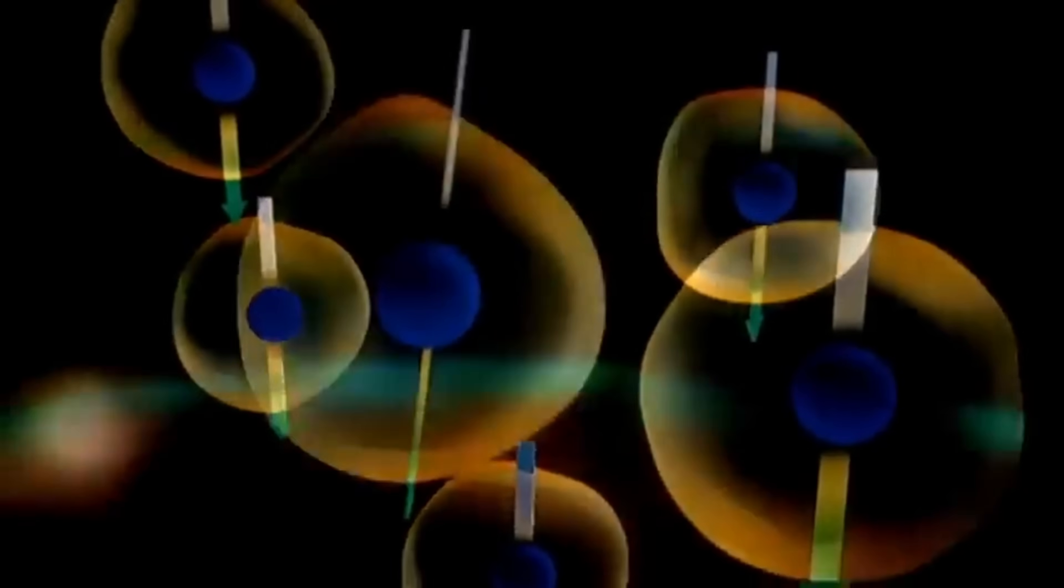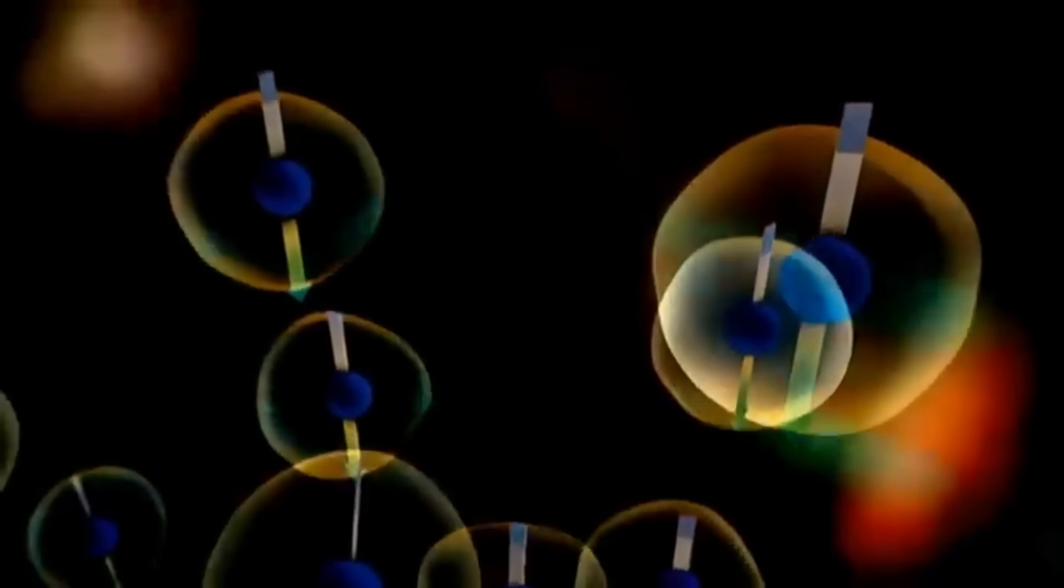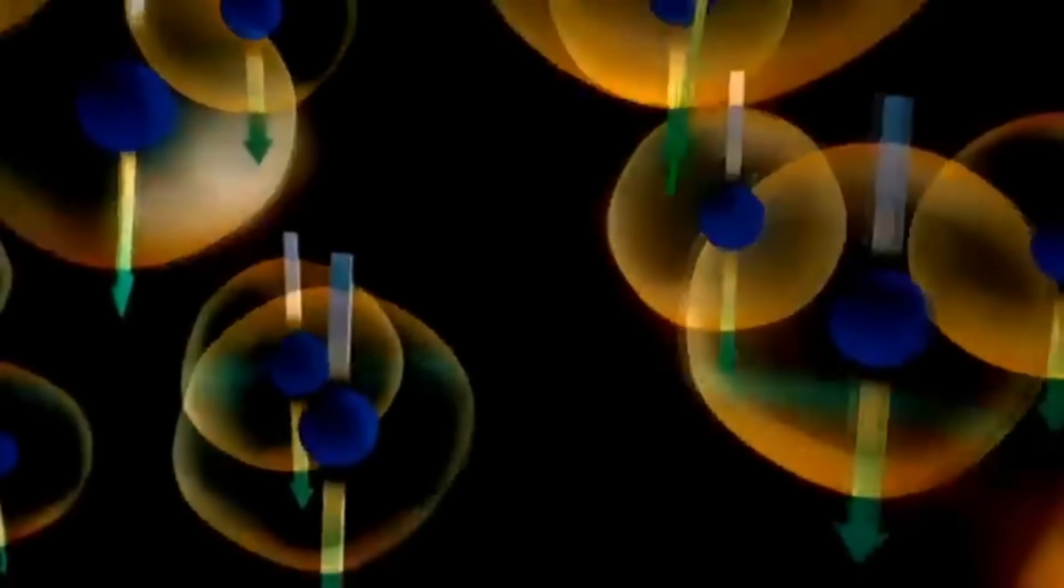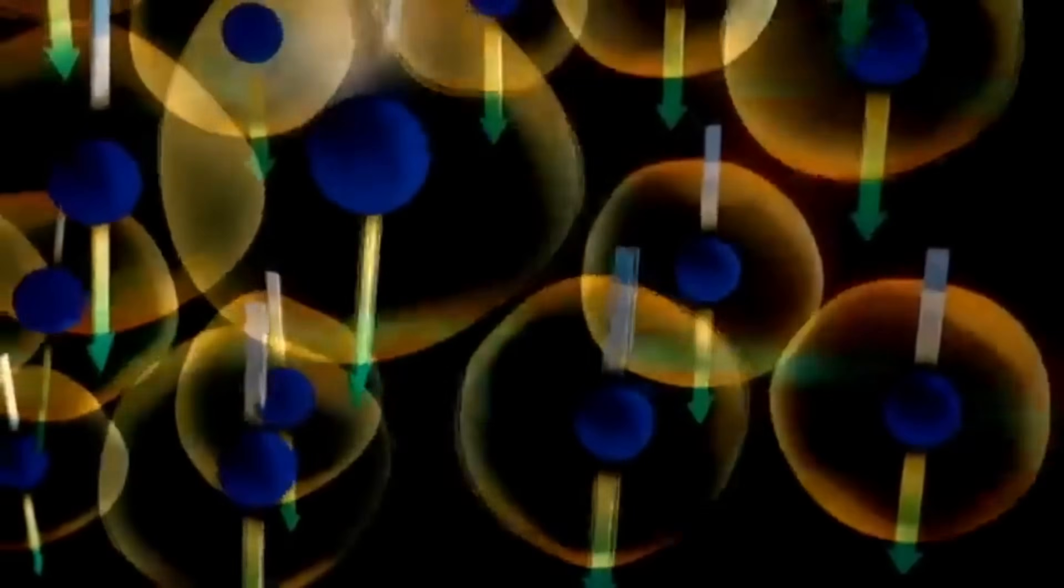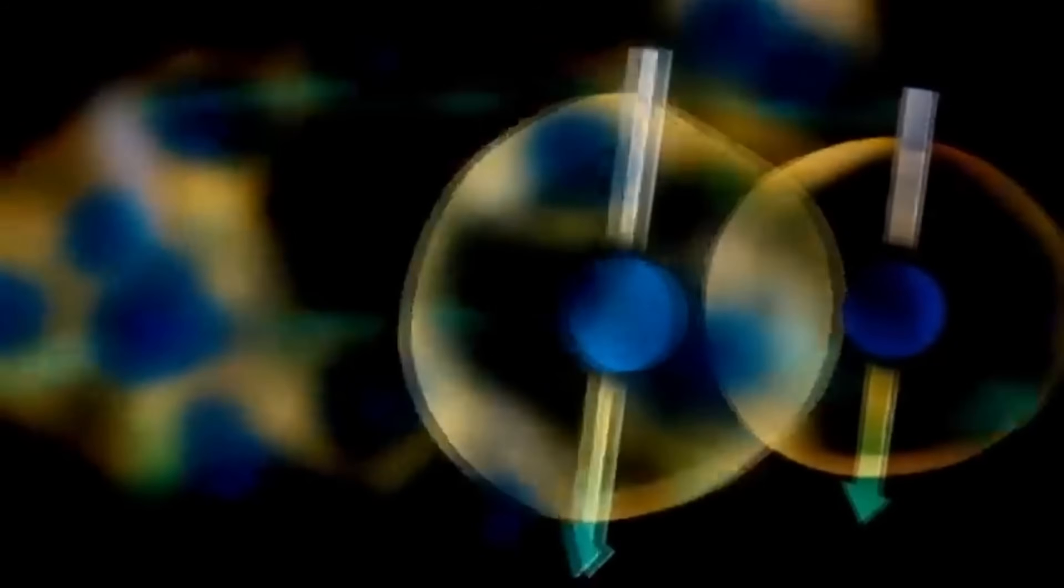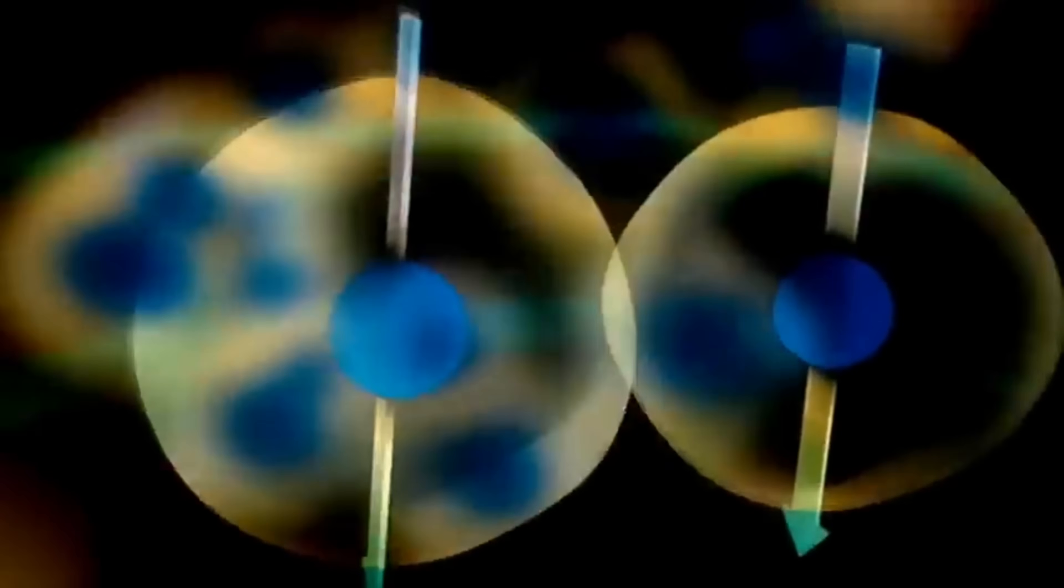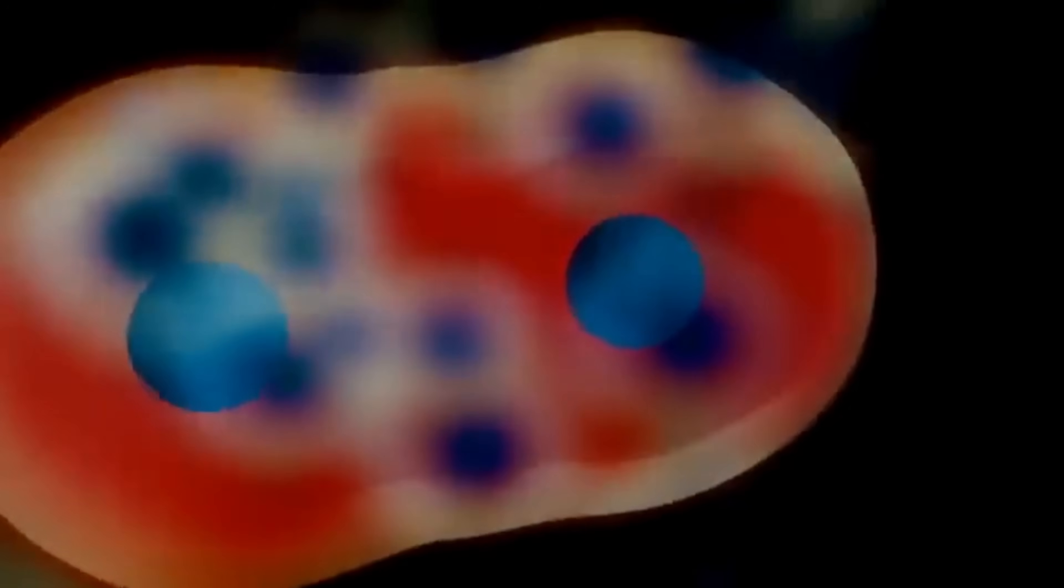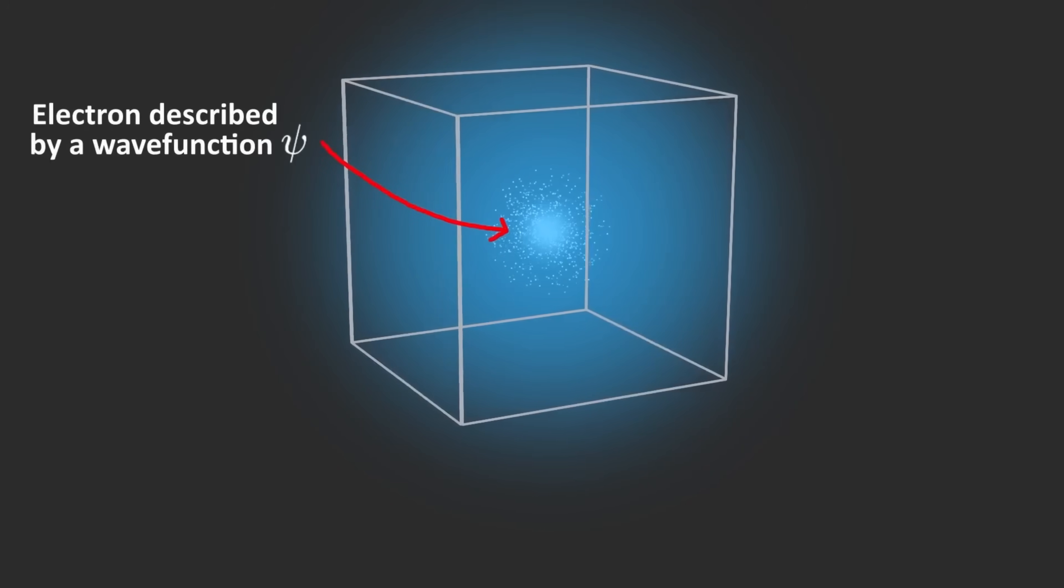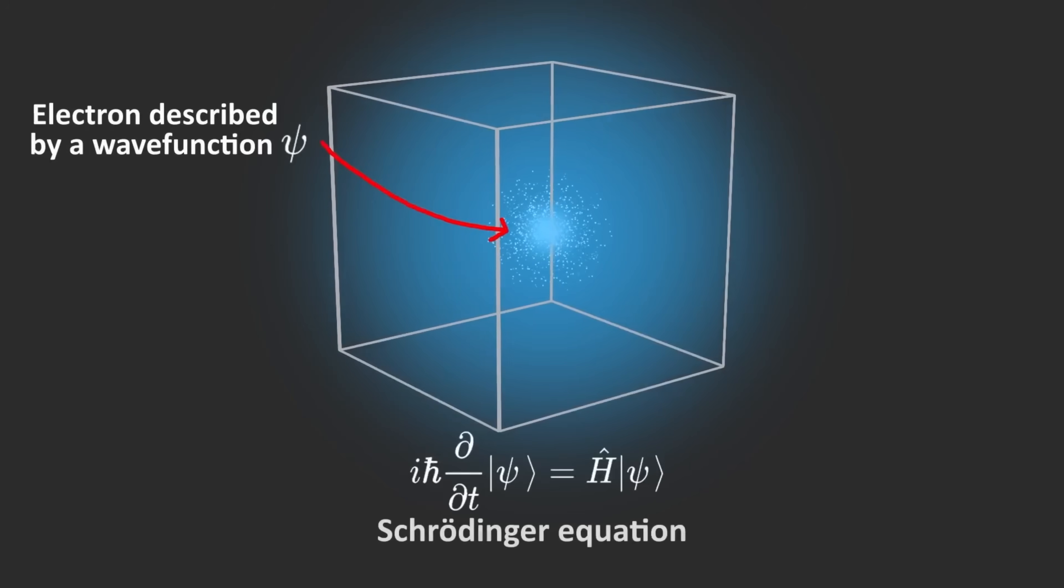Even at near or absolute zero, quantum mechanics still dictates that particles have some motion in them, which is contrary to our Newtonian understanding, which would say when you reach absolute zero, your temperature is absolute zero, all motion would cease. And this goes hand in hand with Heisenberg's uncertainty principle, which states that when observing a quantum mechanical state, you can know either the position or the momentum of a particle, but not both at the same time.